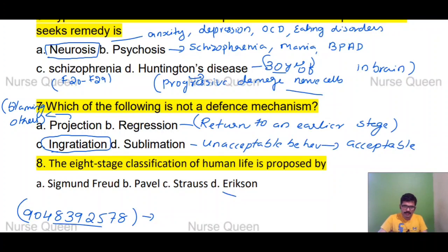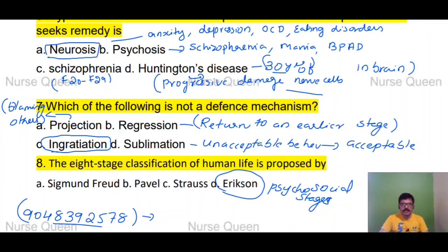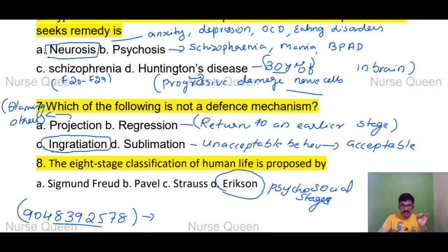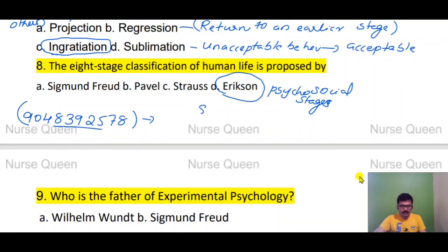Erikson's Psychosocial Stages consist of eight stages of human development.